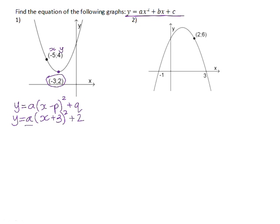In order to solve for a, we use the xy coordinate that we were given. We substitute 4 for y and -5 for x, and we can now solve this equation for a. -5 + 3 is -2. (-2)² is positive 4, and if we subtract 2 from both sides, we get 2 = 4a. Divide both sides by 4, and you get a = 1/2.